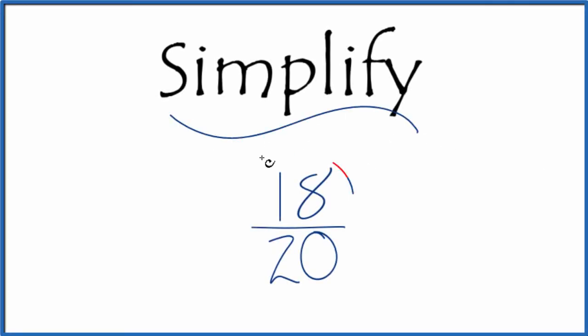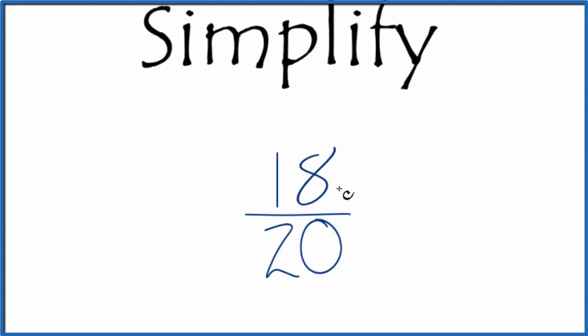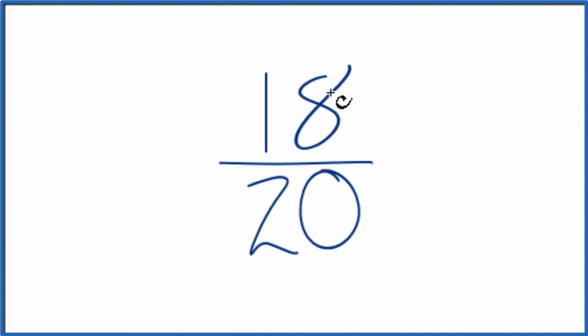If you need to simplify the fraction 18/20, here's how you do it. What we're trying to do is find another fraction that's equivalent - it has the same value as 18 over 20, it's just in lowest terms.